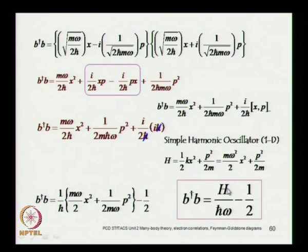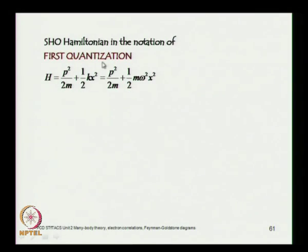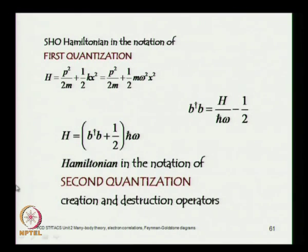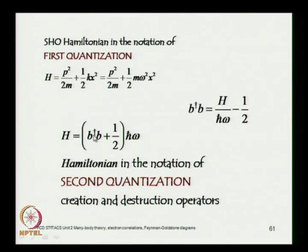Rearranging, we get the Hamiltonian in terms of creation and destruction operators: H = (b-dagger·b + 1/2)·h-bar·omega. The 1/2·h-bar·omega is the zero-point energy, a well-known result for the simple harmonic oscillator. The energy eigenvalues are (n + 1/2)·h-bar·omega, which identifies b-dagger·b as the number operator. This is the Hamiltonian for the simple harmonic oscillator in second quantization notation.